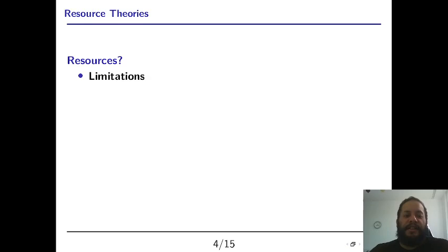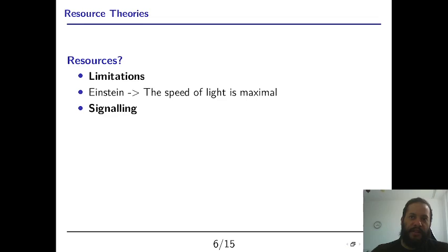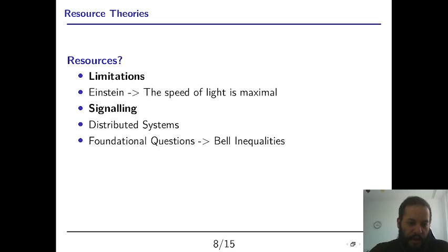So what are resources? Resources are something that appears when there are limitations. For example, in relativity theory nothing can go faster than light. And that means that signaling, when you can send information from point A to point B, is a resource because there are cases where you cannot do it. This appears for example if you're dealing with distributed systems such as the internet.